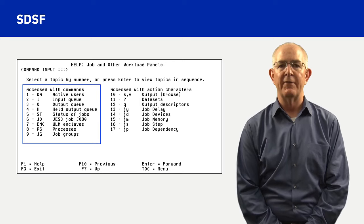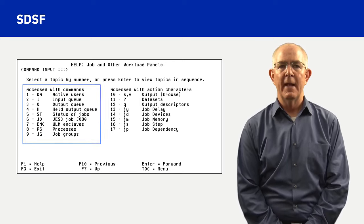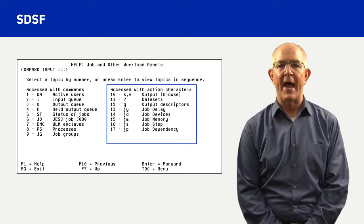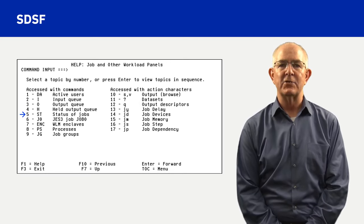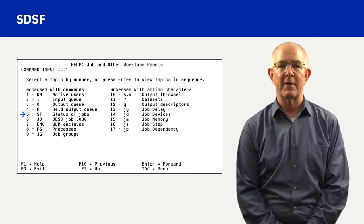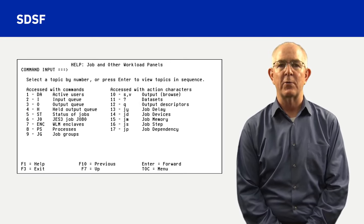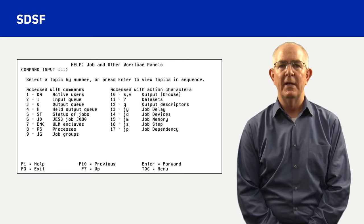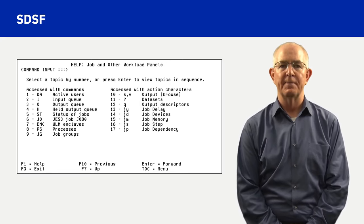The SDSF job and other workload panels help display includes two columns: a list of SDSF commands in column 1 and a list of SDSF action characters in column 2. In the left column, number 5 is the ST — status of jobs — SDSF command. ST is used frequently in the ZOS Introduction video series to view output of jobs.